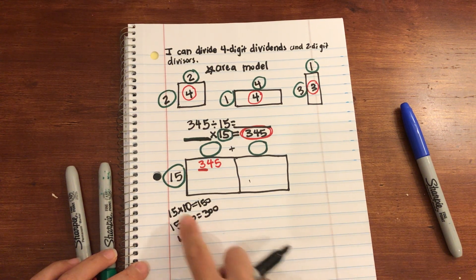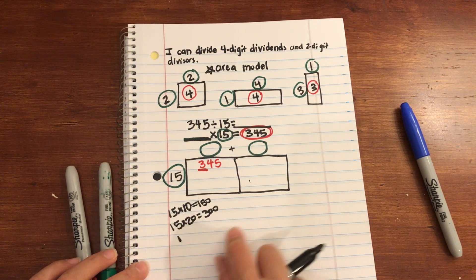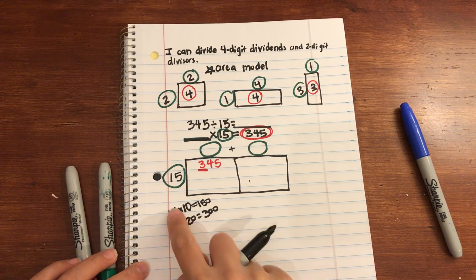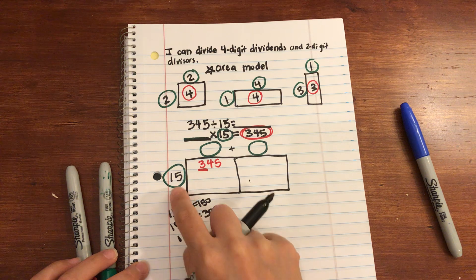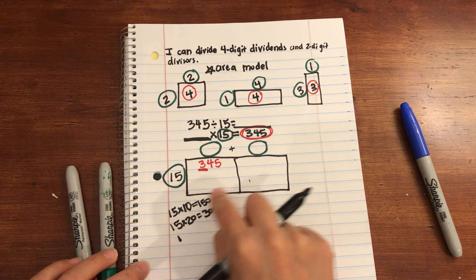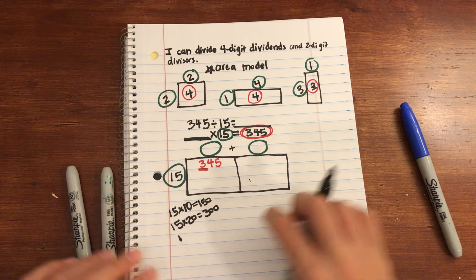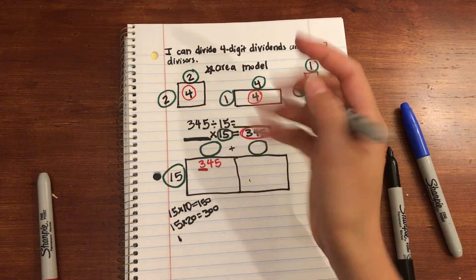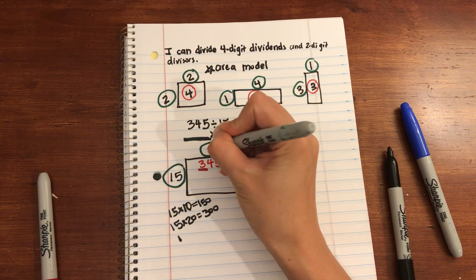So this work down here is basically your hard work. This is where you kind of have to figure out how many groups of 15 go into this product. So I found that my first partial quotient, a partial factor here, is going to be 20.